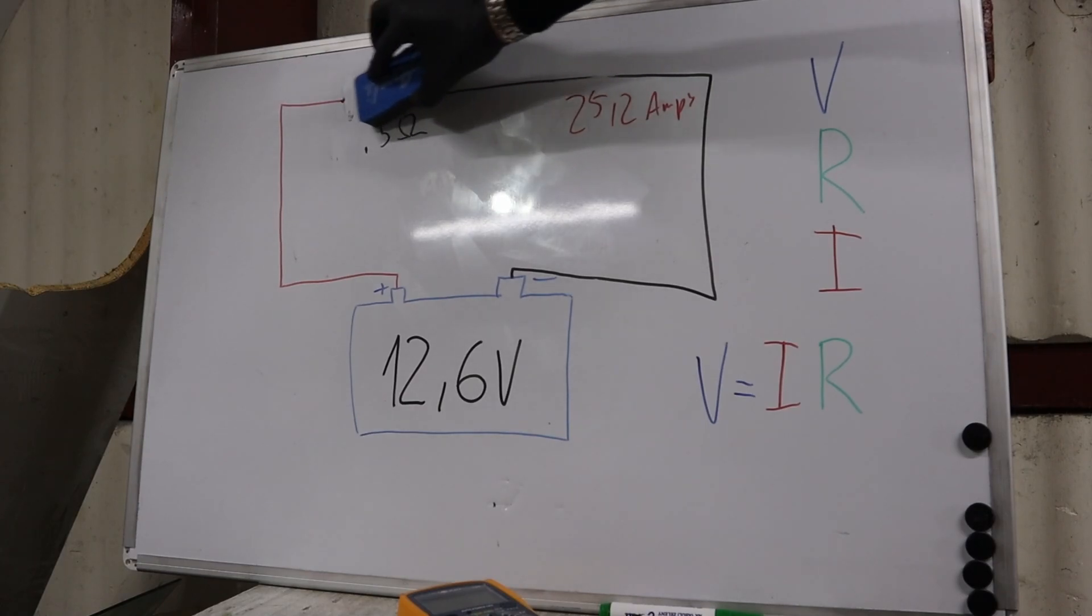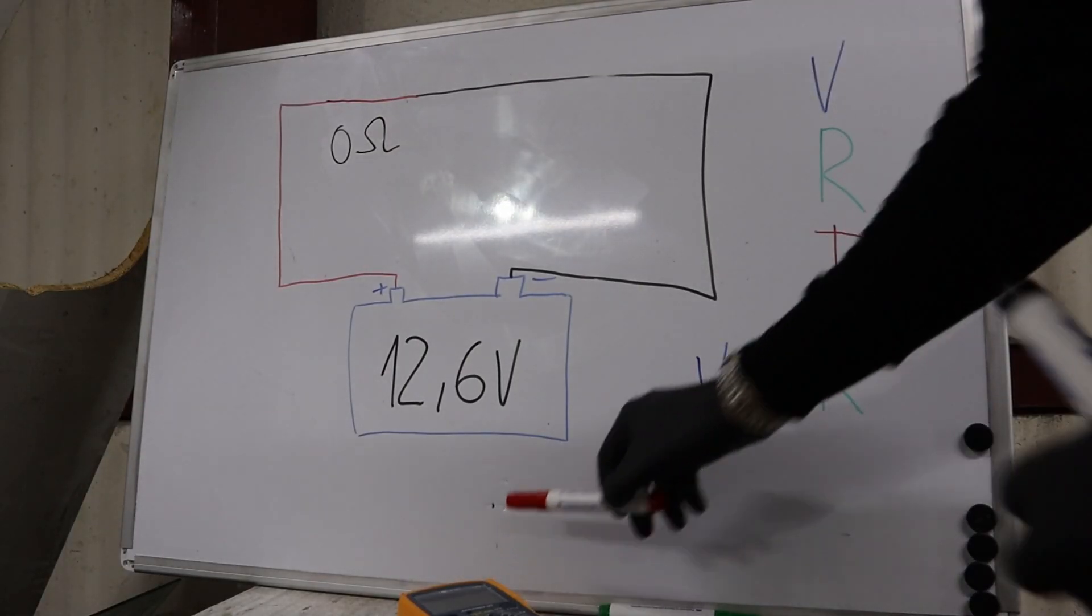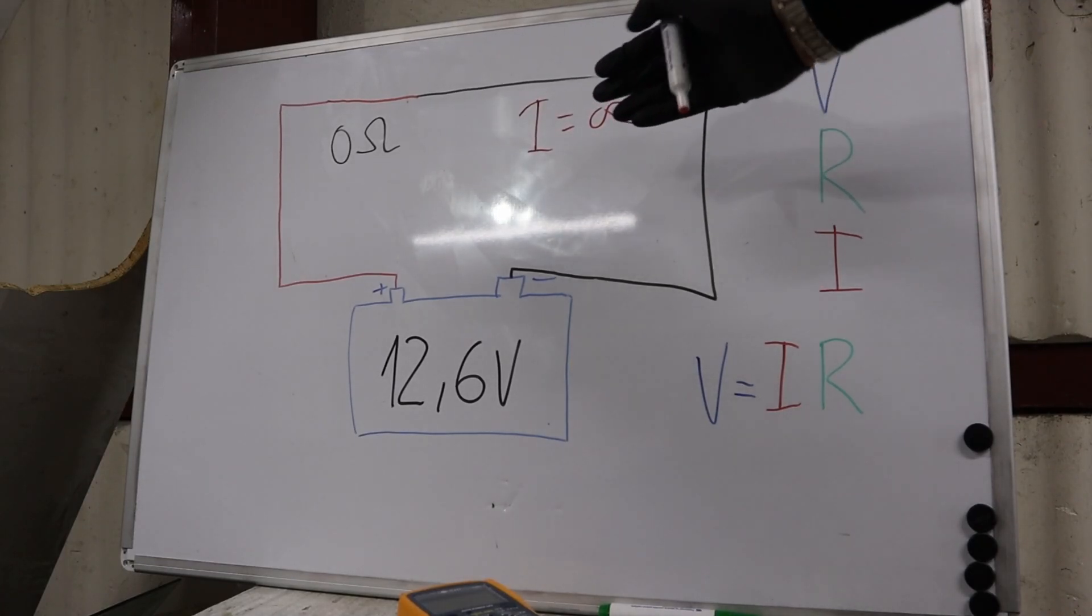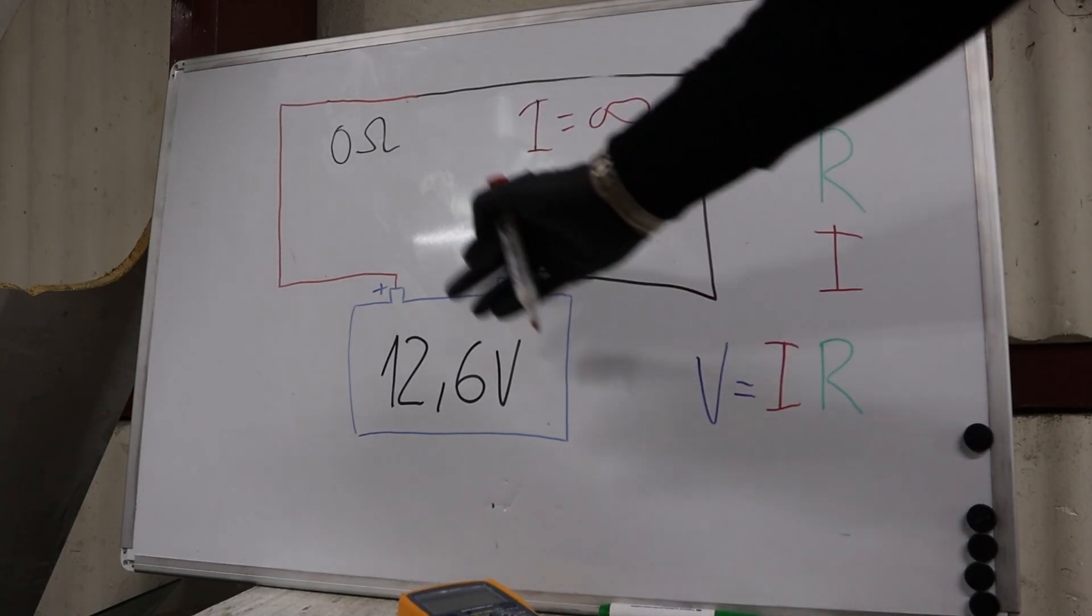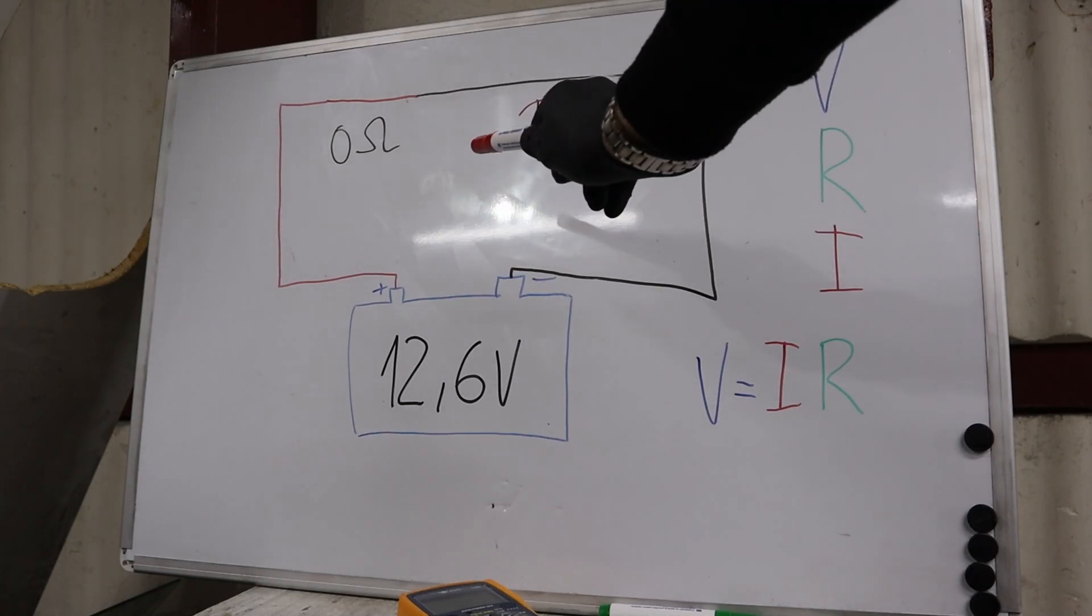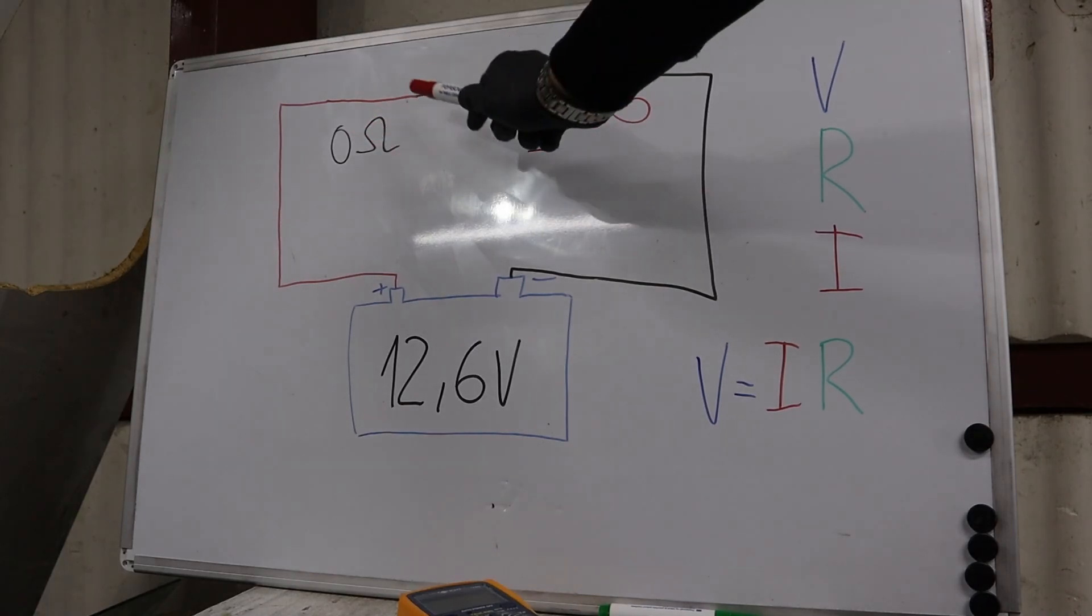Now let's remove this resistor completely. Now there is no resistance at all. Basically, our current is unlimited. You cannot even count it because you cannot divide by zero. This you never want to have in your car. This is called a short circuit because you don't have any component that would eat up your voltage, and that is a problem.